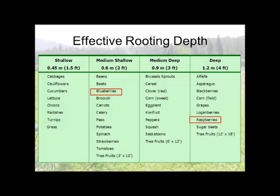Charts are available in irrigation manuals giving effective rooting depths of different crops. Pasture species and grasses are very shallow — around one and a half feet, 18 inches. Raspberries are about four feet, as is alfalfa. Blueberries are around two feet. Knowing your rooting depth is very important for managing your irrigation system. We irrigate and design irrigation systems to where the crop is a mature crop — a young plant isn't at full rooting depth yet, so you have to adjust irrigation for younger crops.